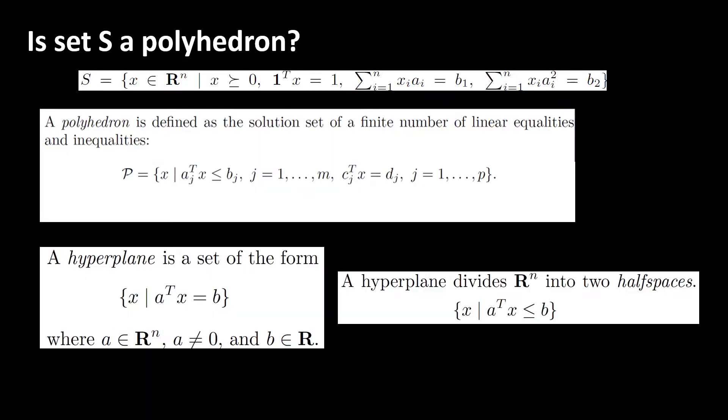To make this video self-contained, I will go over the concept of polyhedron very quickly. A polyhedron is the solution set of finitely many linear equalities and linear inequalities, where the solution set of linear equalities is called a hyperplane.